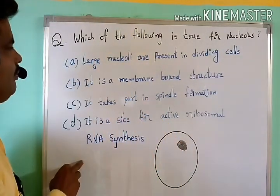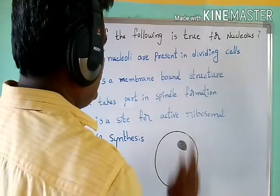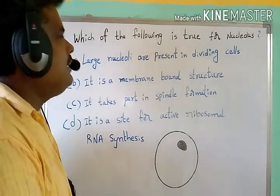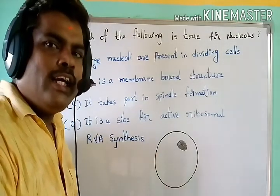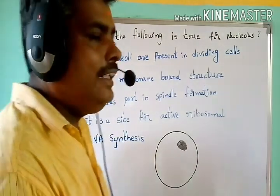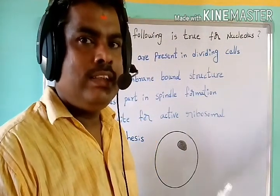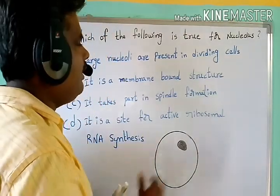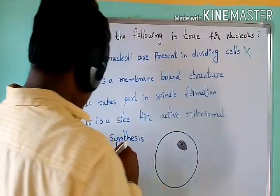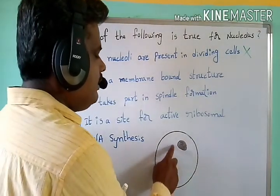Option A: large nucleoli are present in dividing cells. This is not a correct statement, because the nucleolus disappears at the time of cell division. So the size of the nucleolus decreases during division, but increases in interphase cells.